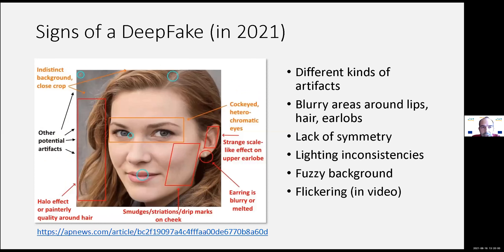In the majority of cases, when we're talking about the so-called poor man's deepfakes, it is still possible to manually inspect and understand that we're talking about deepfakes. Here is a very nice and informative guide by Associated Press that points to several cues that we should be looking for as manual inspectors. But the field is growing fast and we will not be able to rely on manual inspection for too long — therefore, we need automated methods.